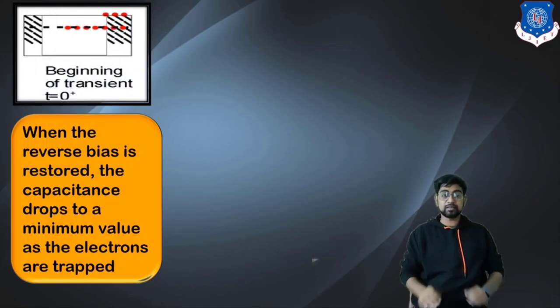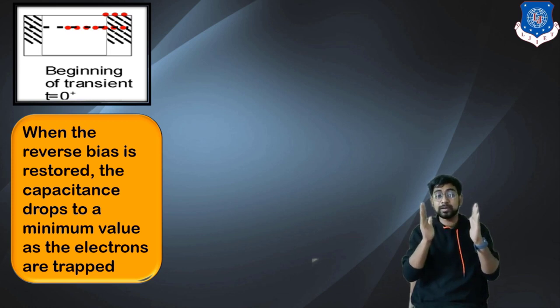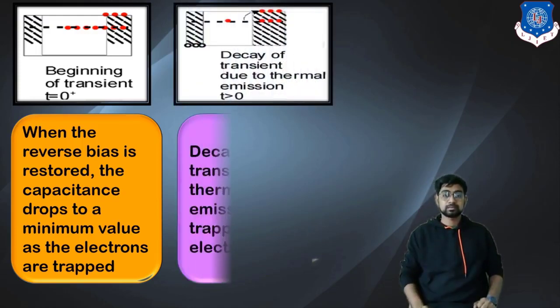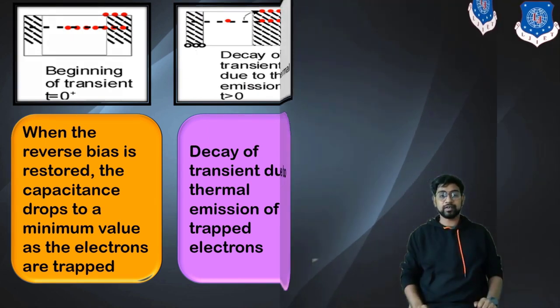After that, at the beginning of the transient state, when the reverse bias is restored, the capacitance drops to the minimum value. Obviously as the reverse bias is restored, the junction capacitance will be reducing to its minimum value. Why? Because the electrons that were actually trying to come back are trapped where the traps are available. The last step is the decay transient due to the thermal emission of the trapped electrons.